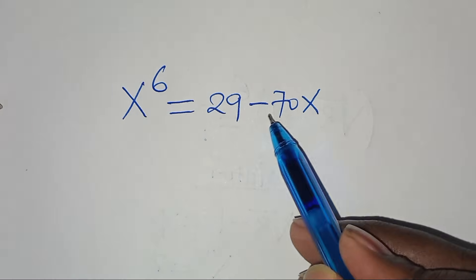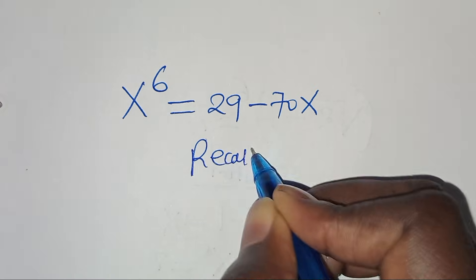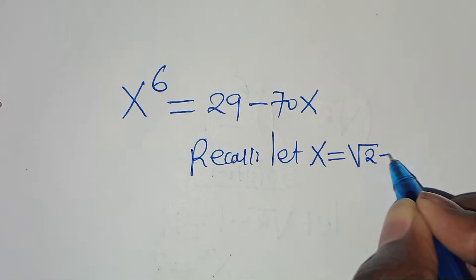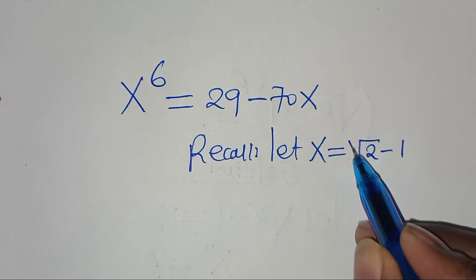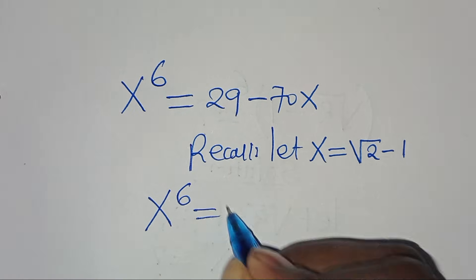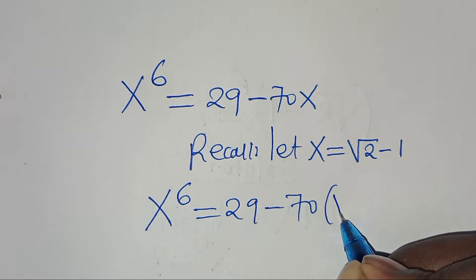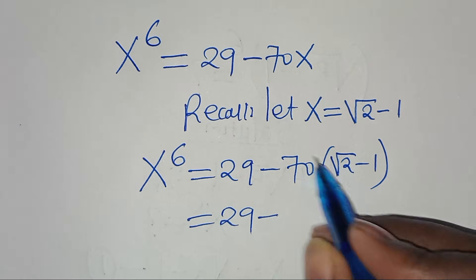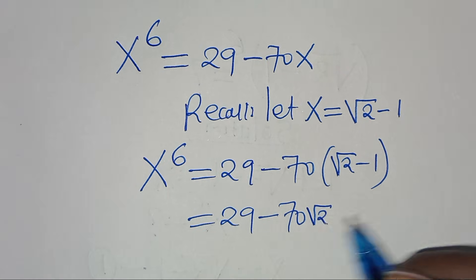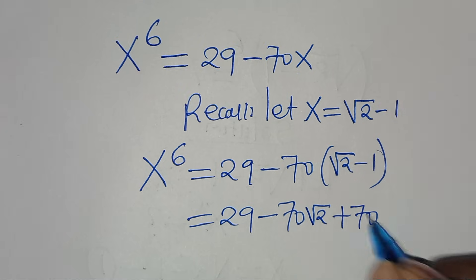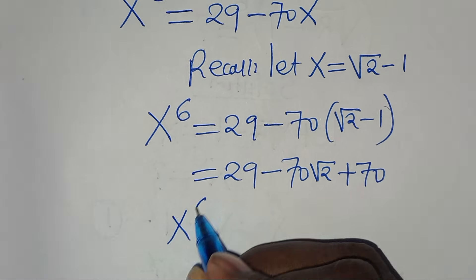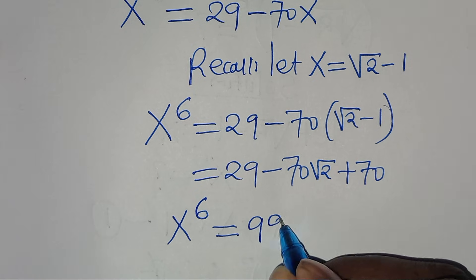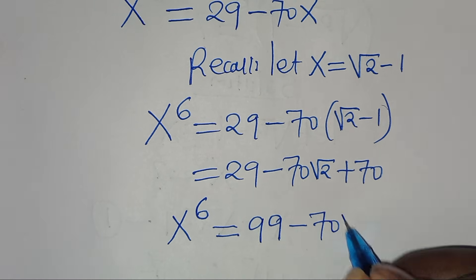We have x to the power of 6 equals 29 minus 70x. Recalling that x equals square root of 2 minus 1, let's substitute x with root 2 minus 1. So x to the power of 6 equals 29 minus 70 multiplied by root 2 minus 1. Expanding: 29 minus 70 times root 2 which is 70 root 2, then minus 70 times minus 1 which is plus 70. So x to the power of 6 equals 29 plus 70 which is 99, then subtract 70 root 2.